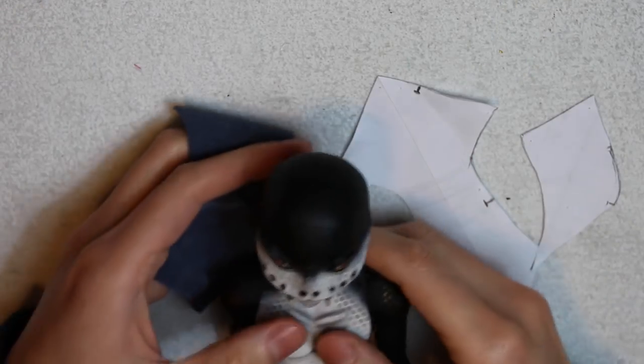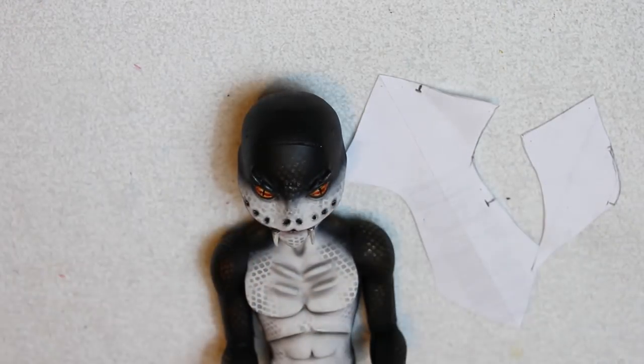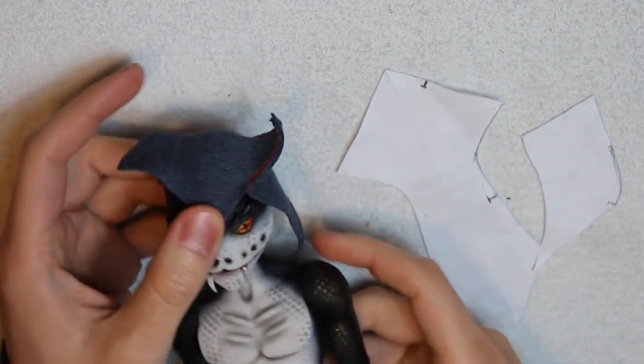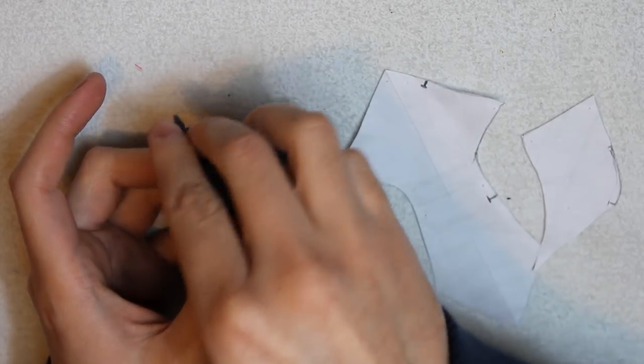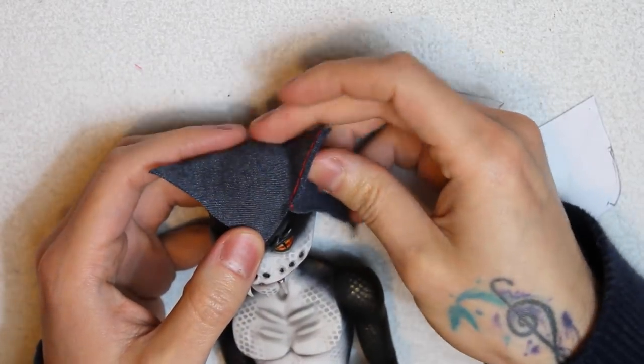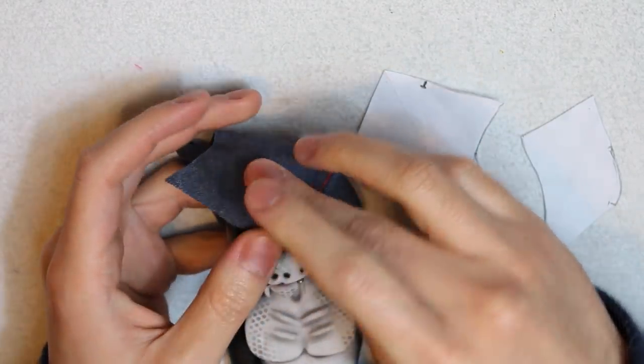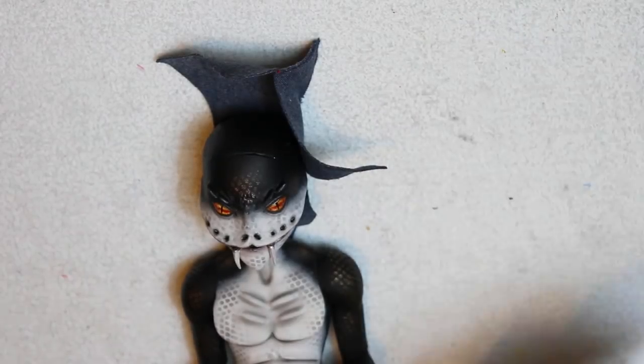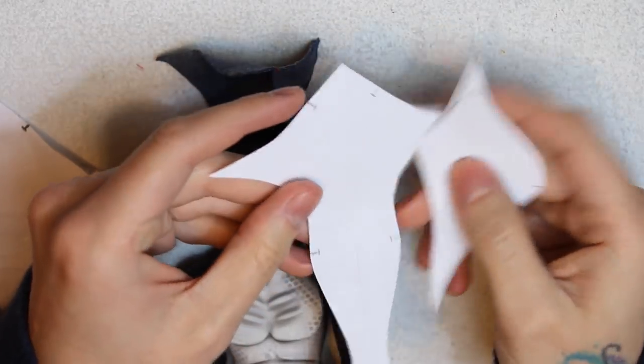For accessories, I'm still into these Mortal Kombat vibes. So I got inspiration from a Noob Saibot hood. First, I need to have my patterns and made a sample with regular fabric. Once I figured out what I needed to change, I modified my patterns.